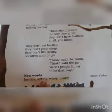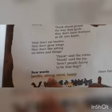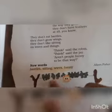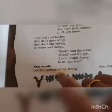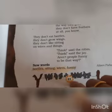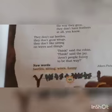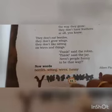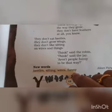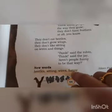So we have got some new words here. Let's see the meanings. Beetles means chhote chhote kide — small insects. Sitting means baithna. See how they are sitting on this wire. Wire means taar — like phone ki taar or light ki taar. These cables are called wires. Funny means mazedar — something that makes us laugh.